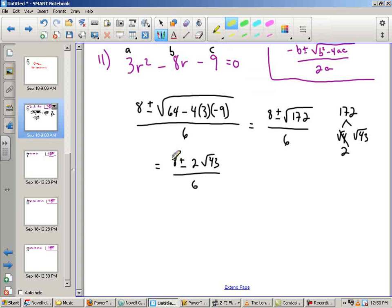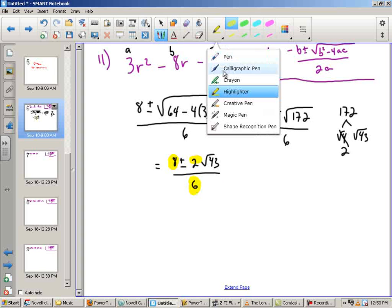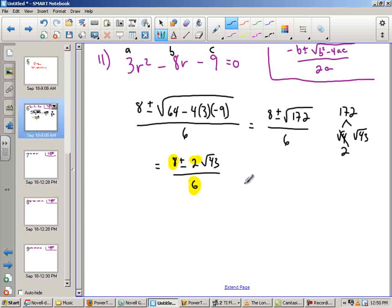So my answer so far is 8 plus or minus 2 root 43 all over 6. But since the 8, the 2, and the 6 are all divisible by 2, I can reduce this. So this equals 4 plus or minus the square root of 43 all over 3. And that is it.